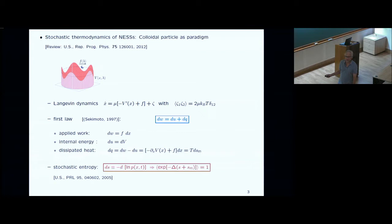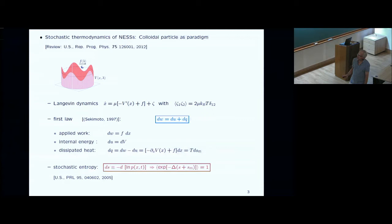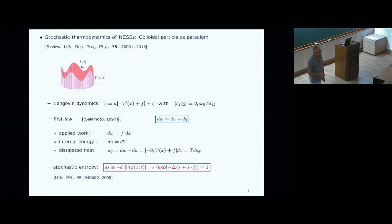This is not the only entropy change to keep in mind. There is a second contribution — stochastic entropy — which you get formally by looking at the increment of log p, where p is the solution of the Fokker-Planck equation. Then you can prove that if you look at the total change of entropy along a trajectory, put it in the exponent, and average over any initial condition, any type of driving, and any length of driving, you always get what is called the integral fluctuation relation for total entropy production.